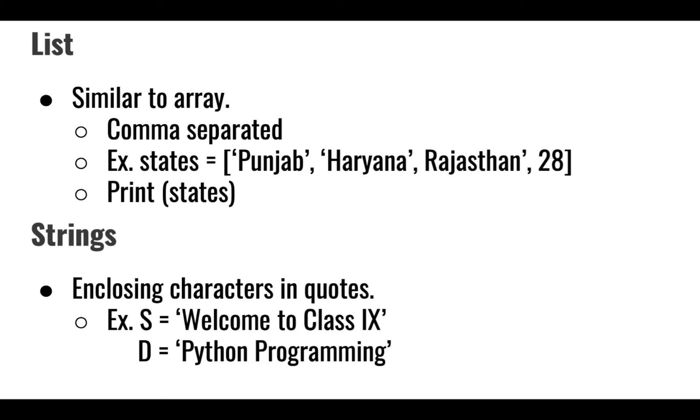List is very much similar to array. In Python, we call array as list. These are comma separated values. Just for example, we can write Punjab, Haryana, Rajasthan or we can write a number inside it. Now if I'll print states, it will give me the result as Haryana, Punjab, Rajasthan, 28 together, but in sequence.